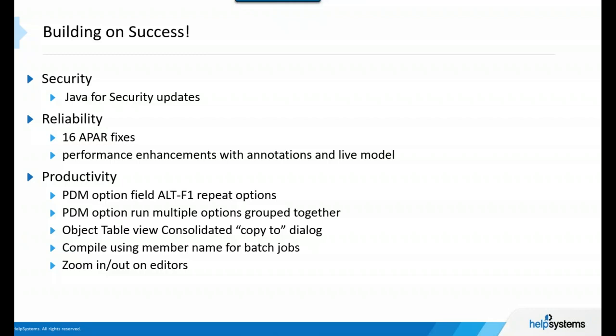For reliability in the next release coming out, we've fixed 16 APARs. We are the development team for RDI and also the level three support — so when you run into issues, you contact IBM using the PMR system and we'll get those bug fixes out as soon as we can. In version 9.6.0.6, coming out in May, we've added performance enhancements. The quick filters in the PDM perspective are actually faster than using the RSE perspective — that's the direction we want to continue.